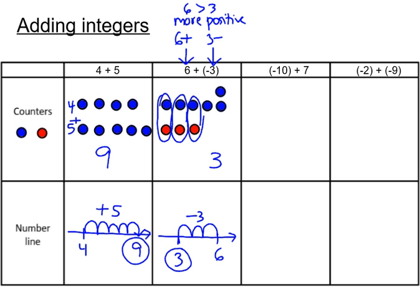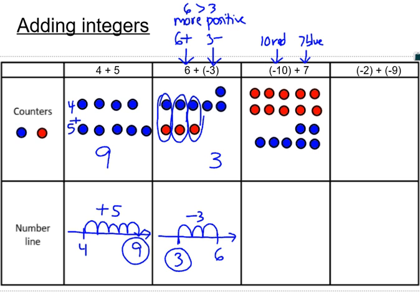Now let's look what happens if you have more negative. So see here, we have 10 red, 10 negative, and 7 blue. So if we have more red than blue, then our answer is going to be negative. Let's look at the counters, representing that with the counters.